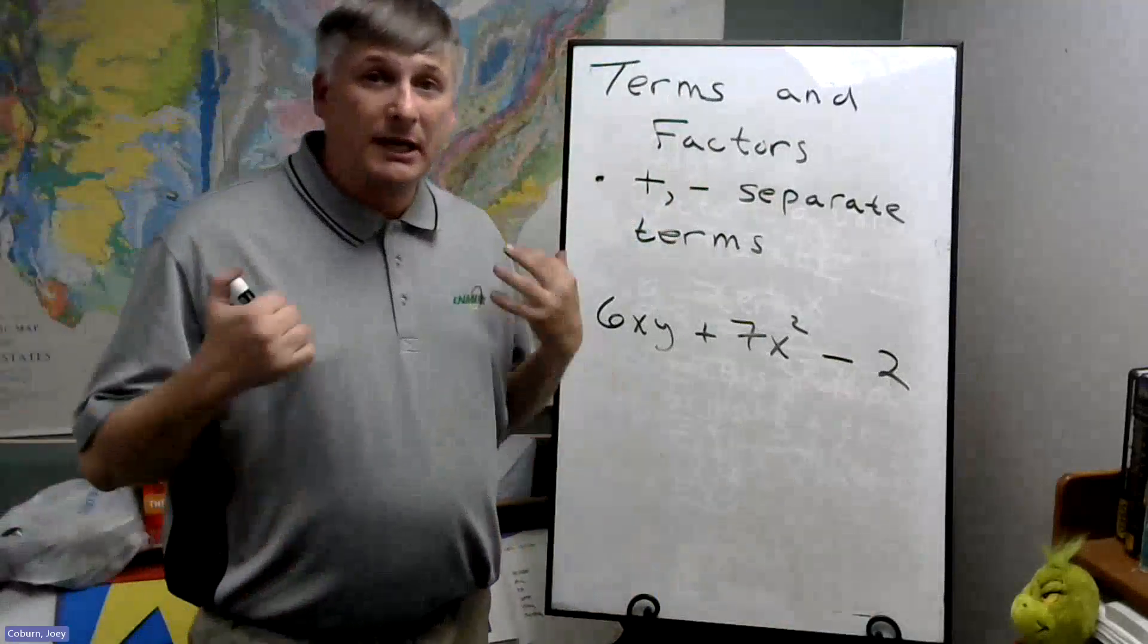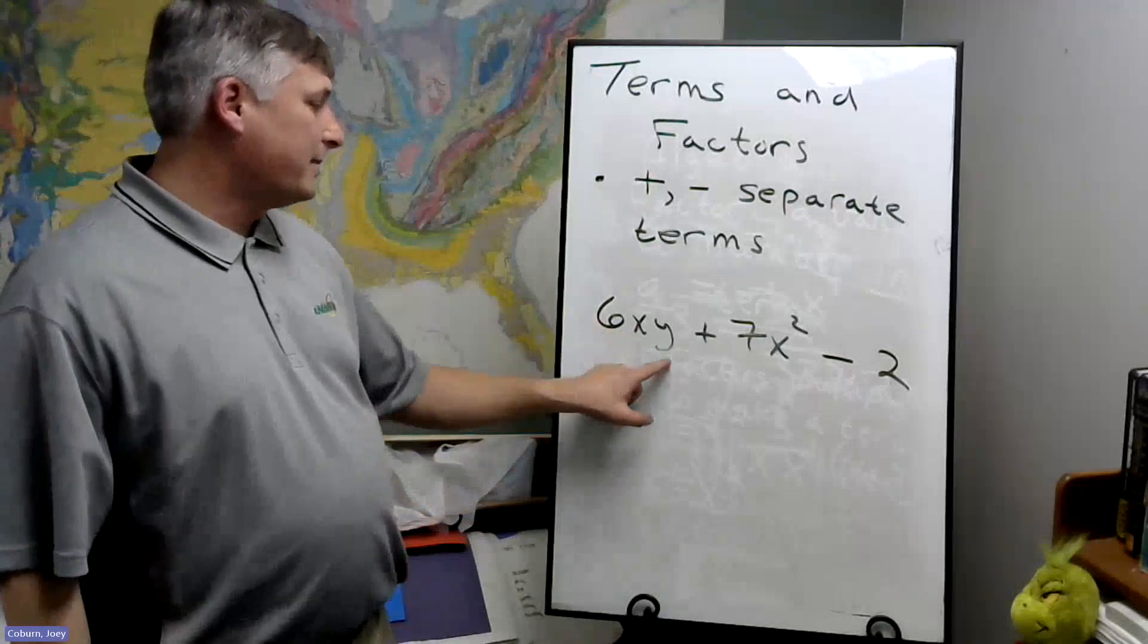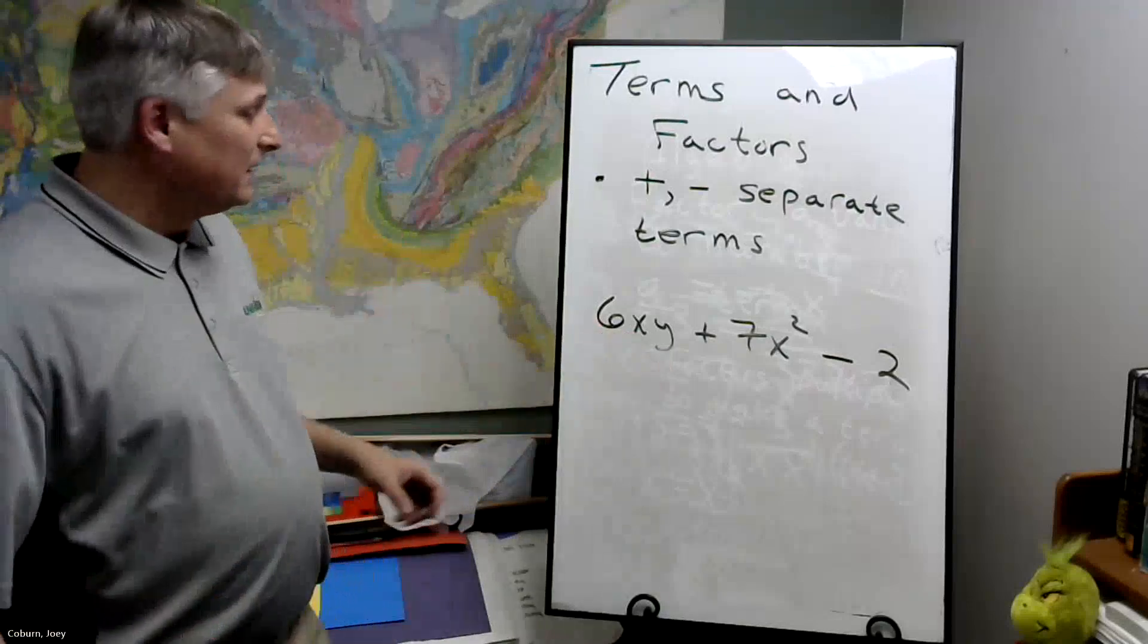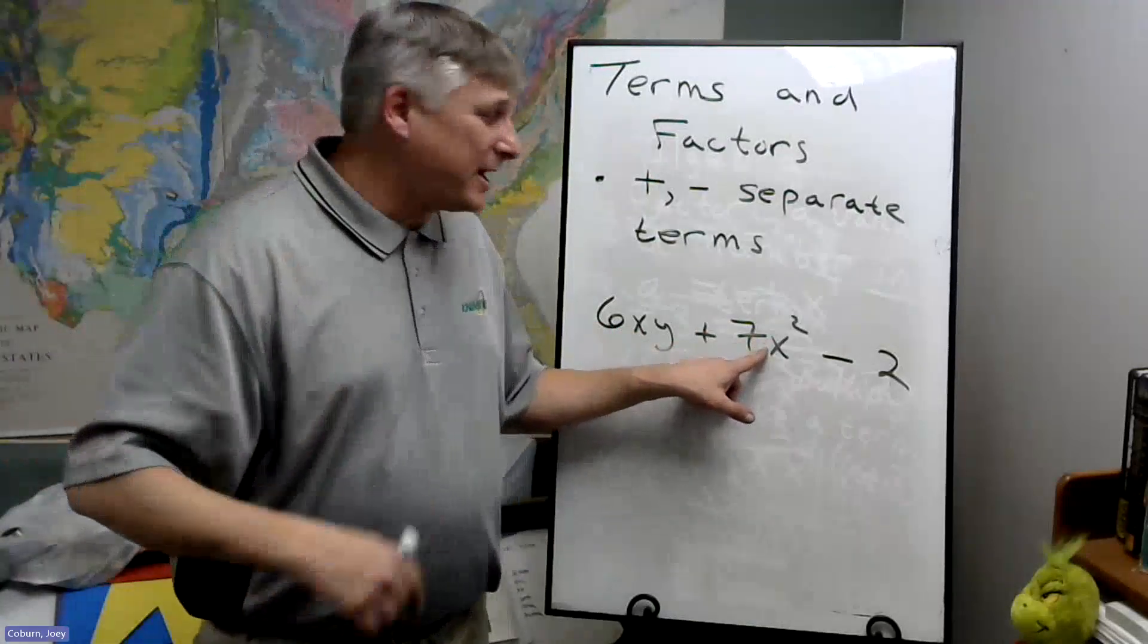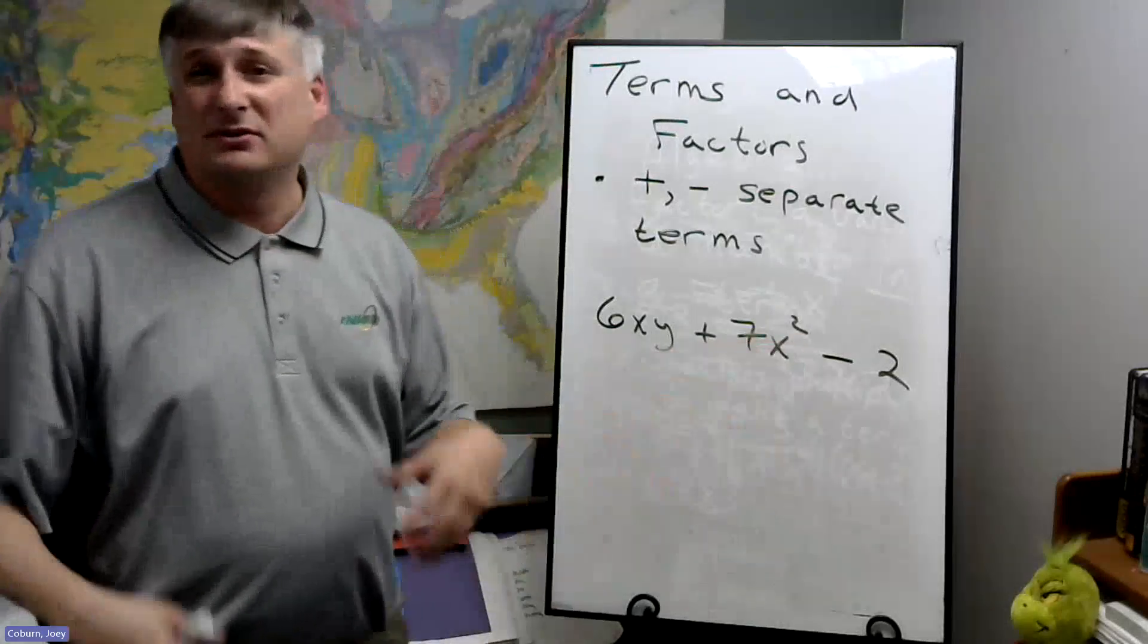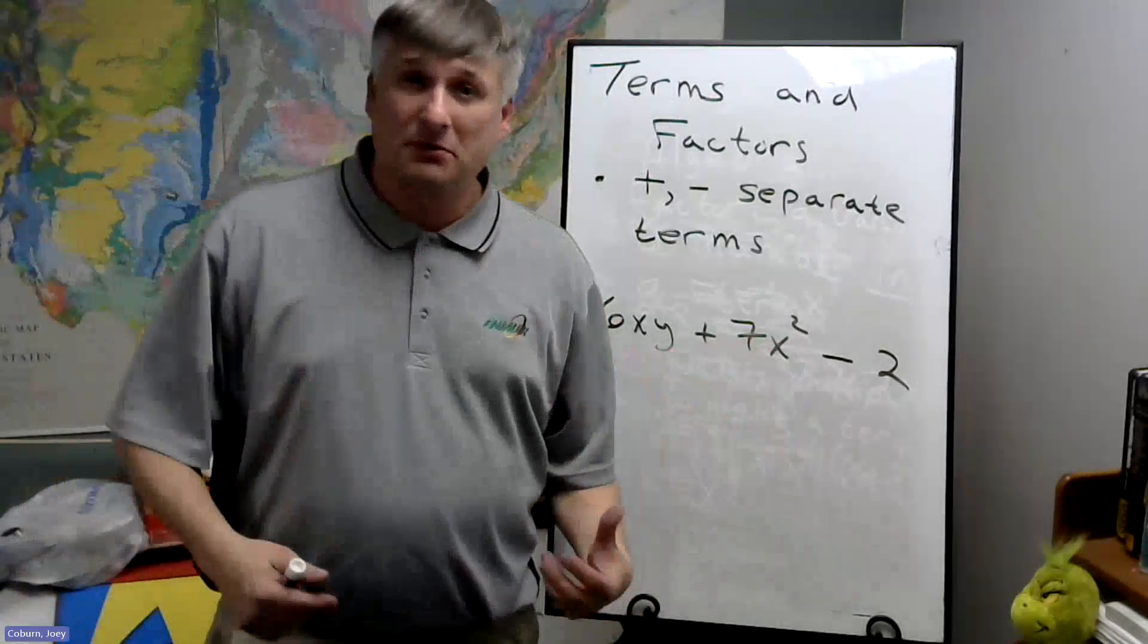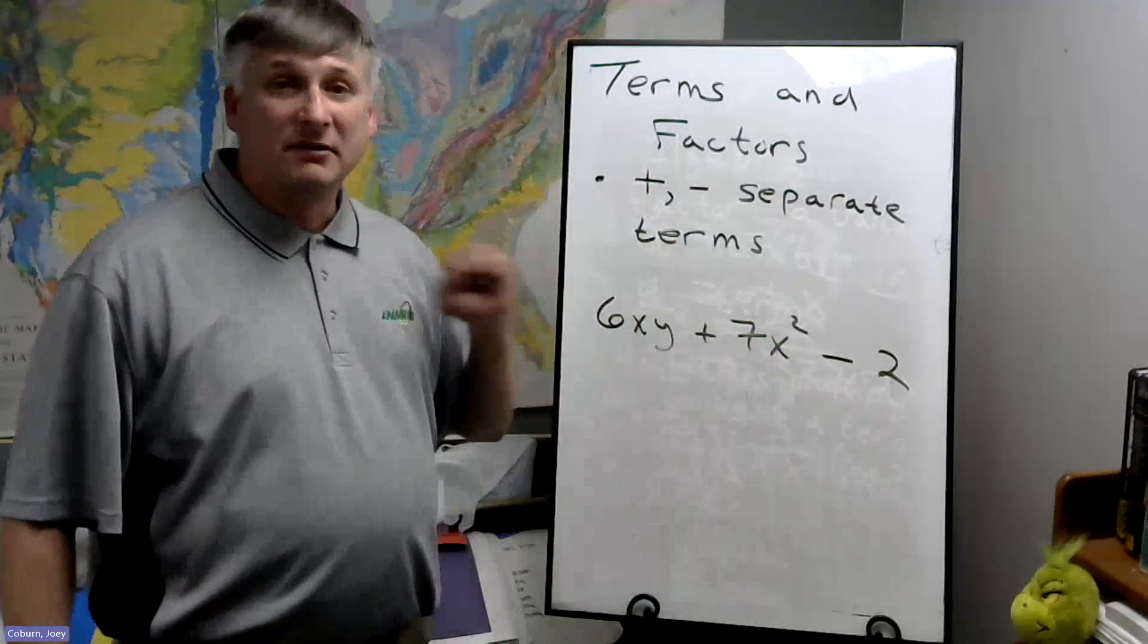So here we have three terms. This one is a number times a variable times another variable. This is a number times an X times an X. The X times X, we can call that X squared, just like three times three is three squared.